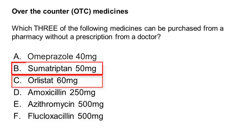C, Orlistat 60 mg, and E, Azithromycin 500 mg. This can be supplied by a pharmacist without a prescription if a patient has a confirmed asymptomatic chlamydia infection, they're over 16, or for treatment of a sexual partner of someone diagnosed with chlamydia.